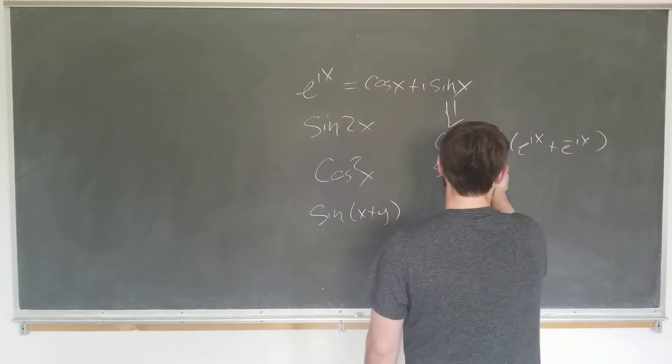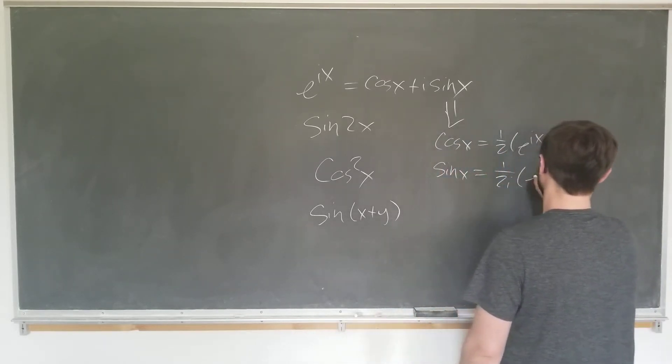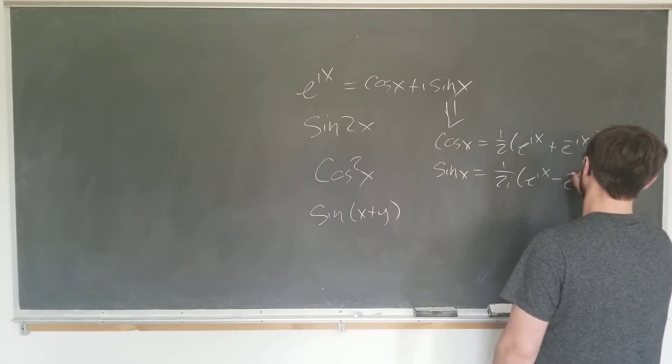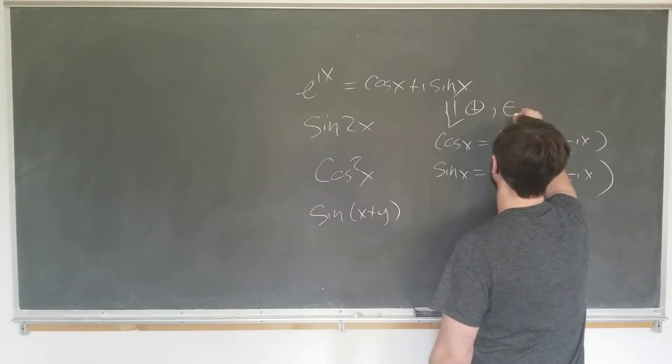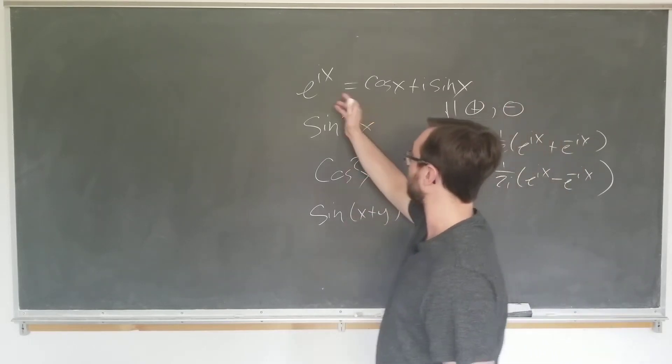And sine x is equal to 1 over 2i times e to the ix minus e to the minus ix. Do this by adding and subtracting the equations from each other respectively.